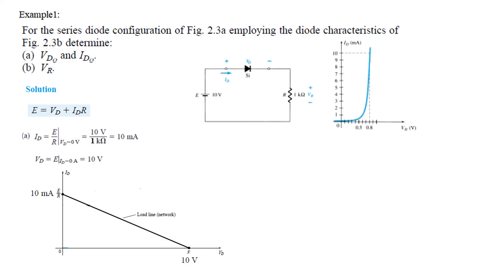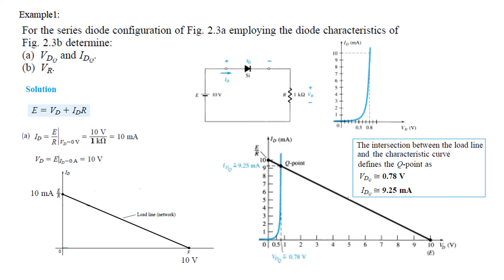And now we plug in the characteristics curve. So we plug in the characteristics curve here. And the intersection is called the Q point. So Q point is approximately 9.25 milliampere from here. And from here you can see it is approximately 0.78 volt. So VdQ is 0.78 and IdQ is 9.25. So we have done the first part.